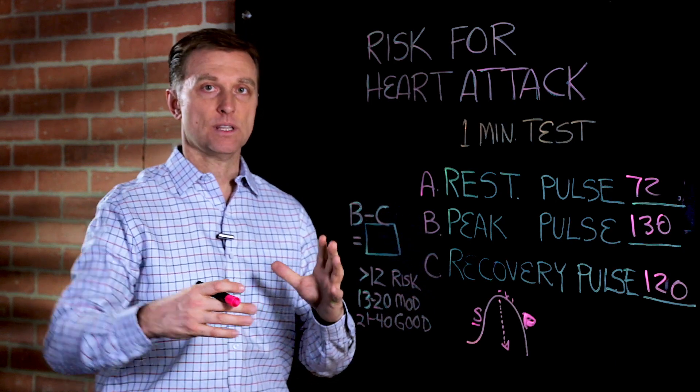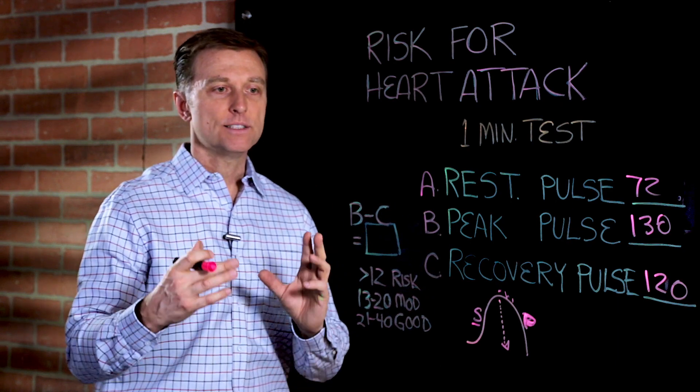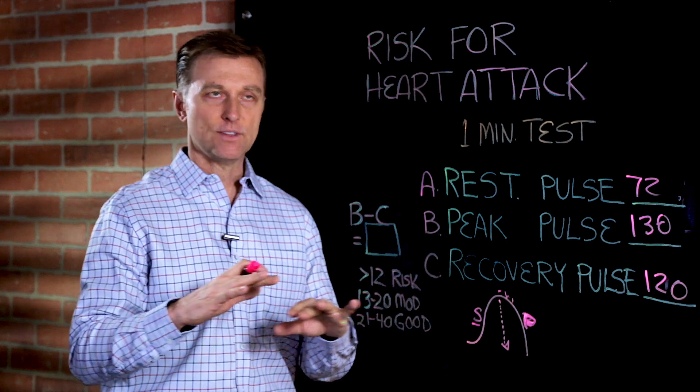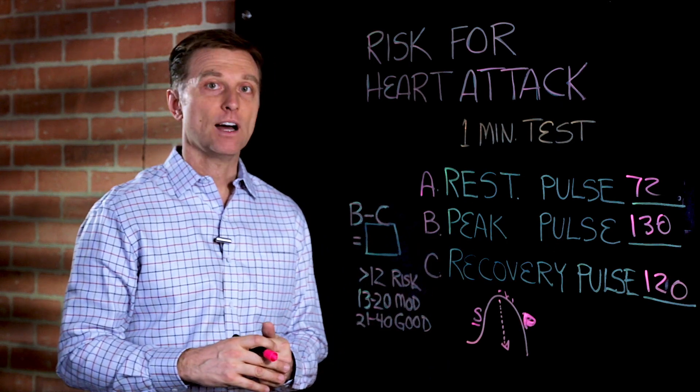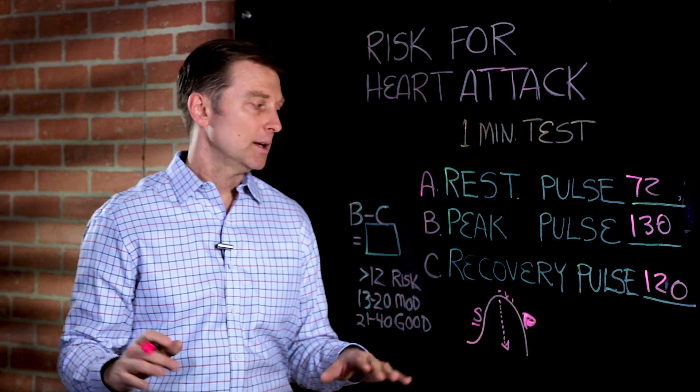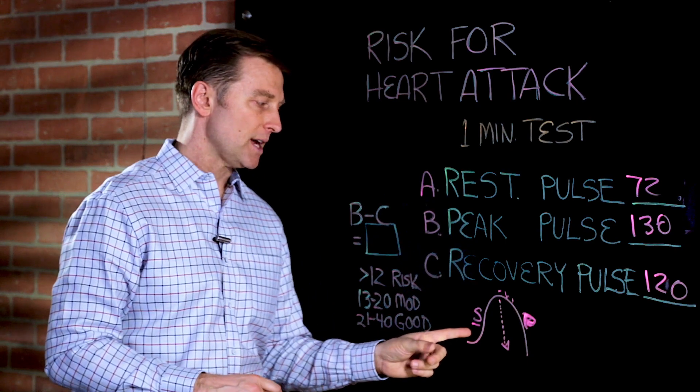So this system is in the background working hard to keep your pulse rate at 72. It's in the background working hard to chill you out. But it's inactivated when you're under stress.